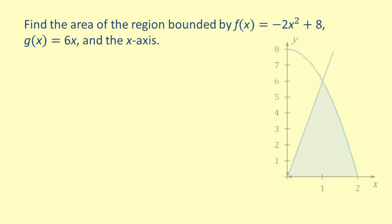Let's begin by sketching a graph of the curves and finding the desired region. Notice that on the interval from 0 to 1, the graph of g of x equals 6x serves as the upper bound.